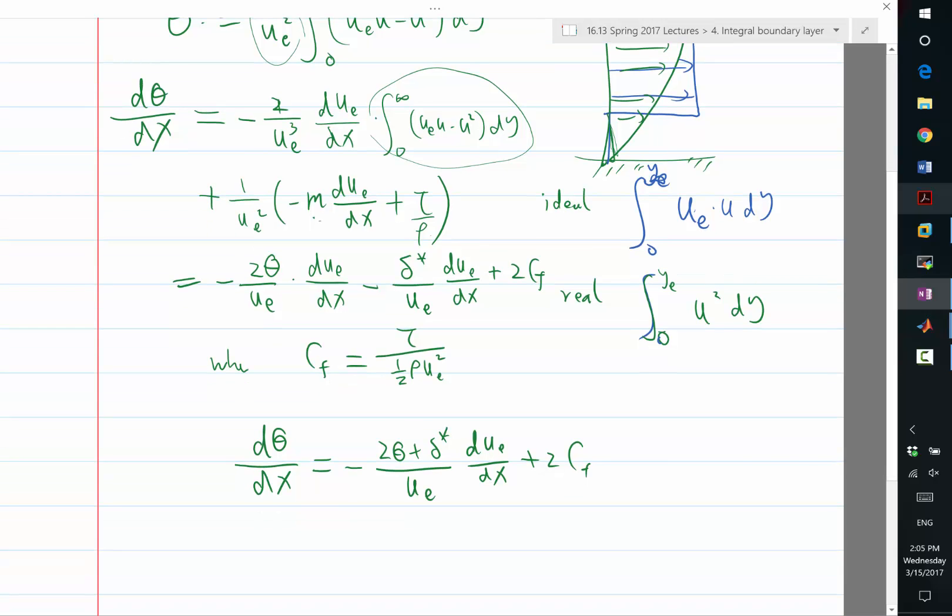So, we can solve the equation for dθ. And because I know what ue is, I know what dθ is. I can solve the equation for dθ if I know the skin friction coefficient. Do we know delta star? That's a good question. So, we don't know delta star, and we also don't know the skin friction coefficient. So, these are the things we don't know.